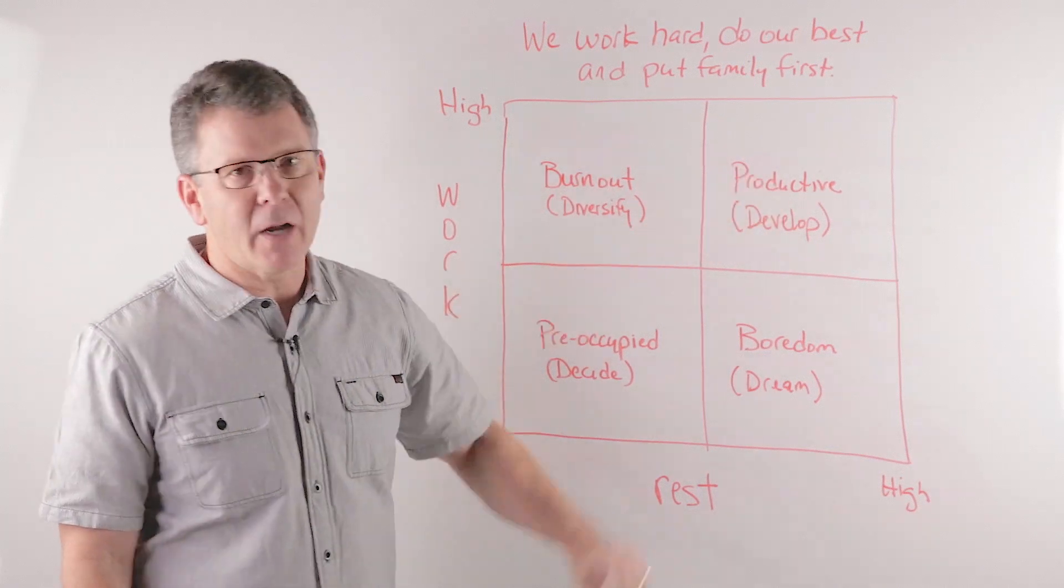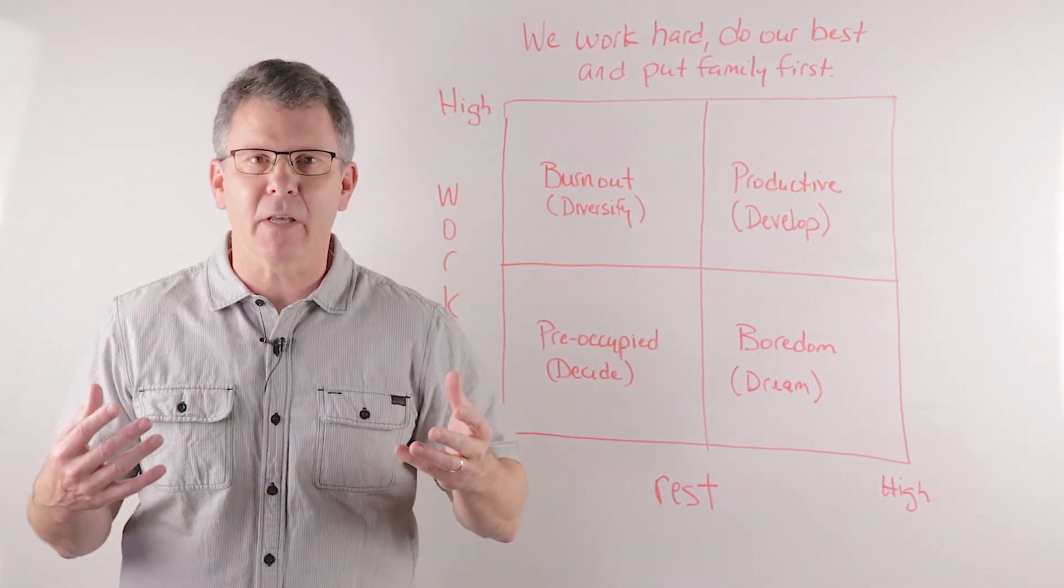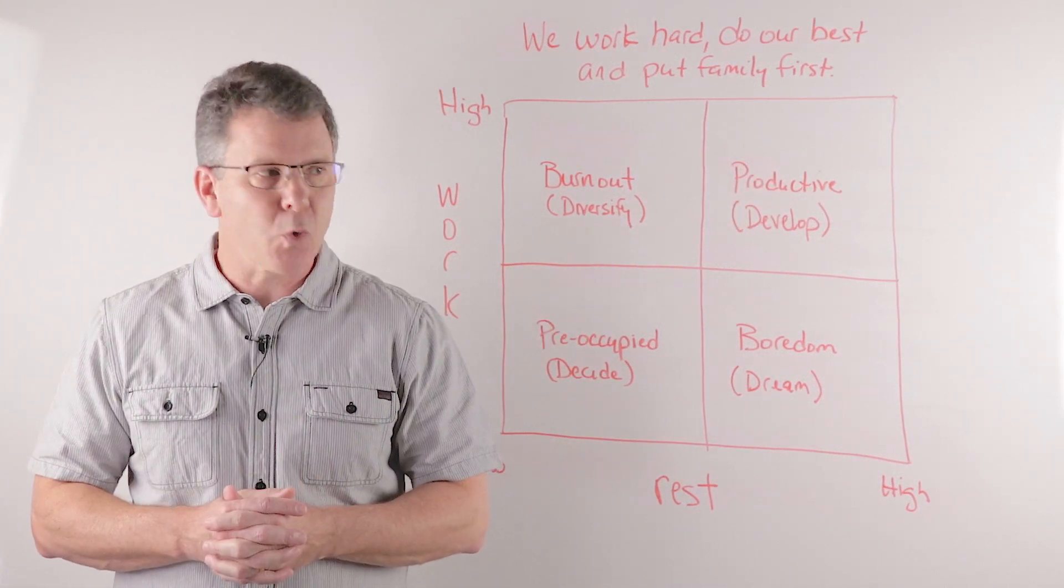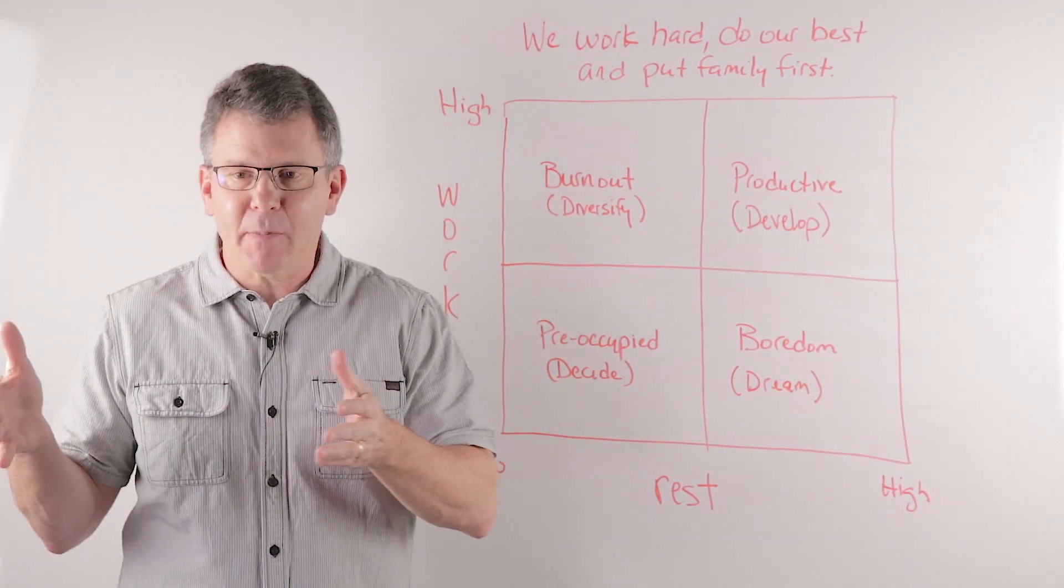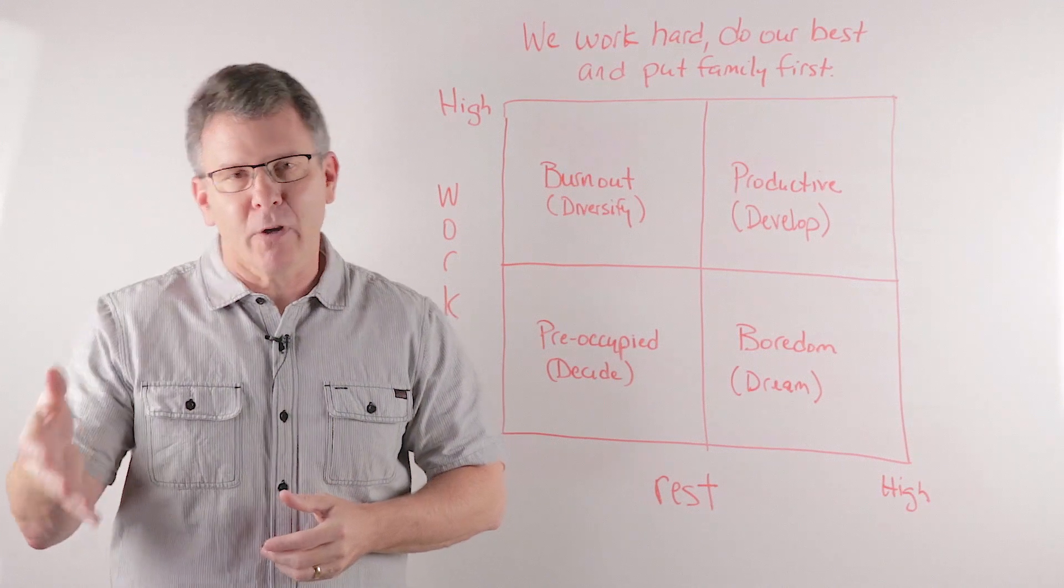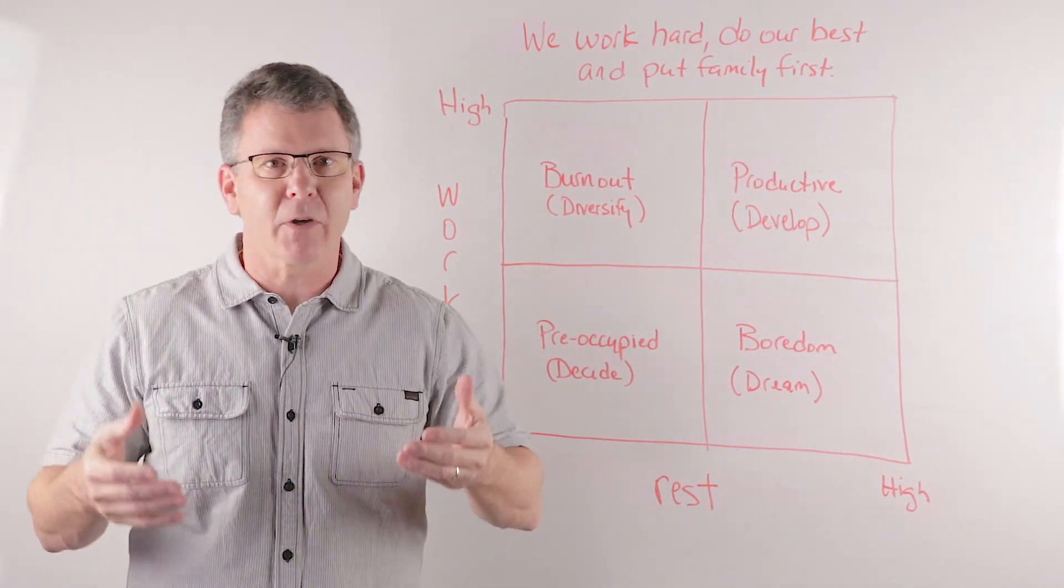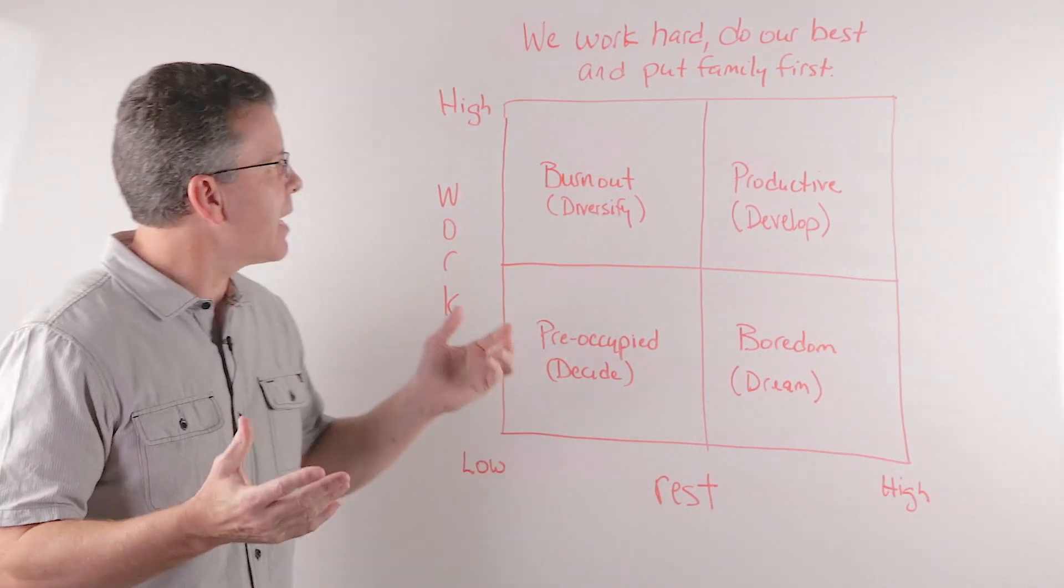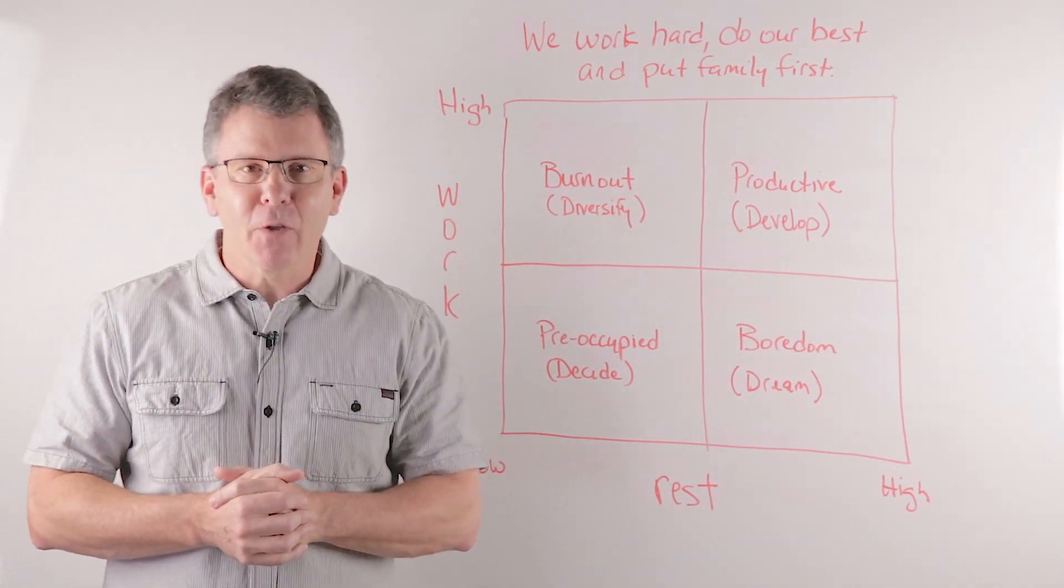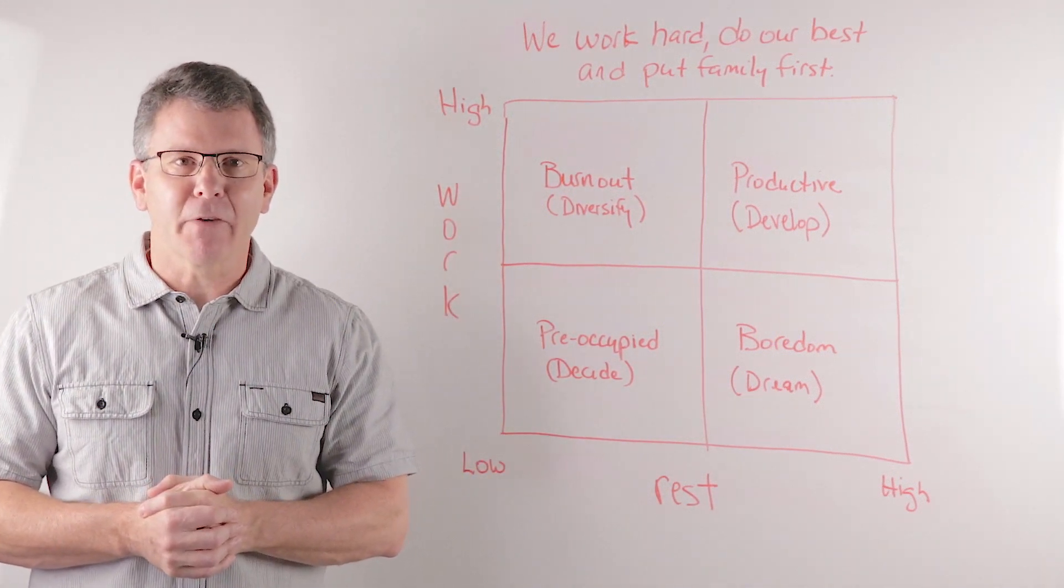And then finally, those who are in the productive quadrant, then just ask them to develop others. They figured out a rhythm of life that's worth reproducing. So encourage them to take others on a journey with them. Let them see their rhythms of life and how they treat family and how they treat work, how they focus on God and both those things. Make sure that they learn to work hard, do their best, and also put their family first.